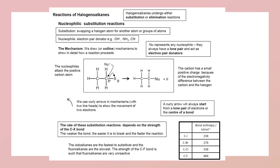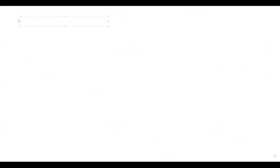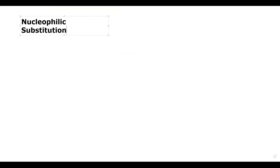The reactions that halogenoalkanes undergo are nucleophilic substitution reactions, and there is a general mechanism for this reaction to occur. In nucleophilic substitution, there is a bond between carbon and halogen, and because halogens are more electronegative than carbon, there will be a partial negative charge on the halogen and a partial positive charge on the carbon.